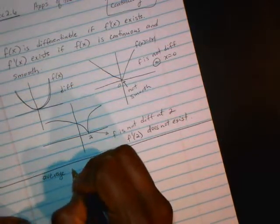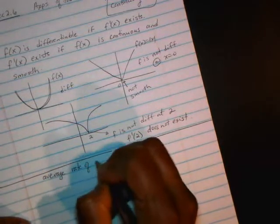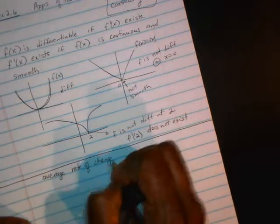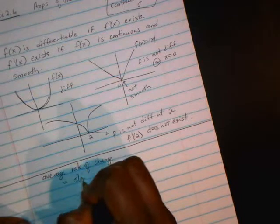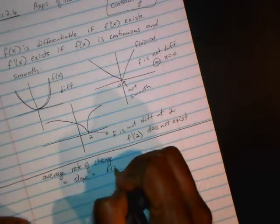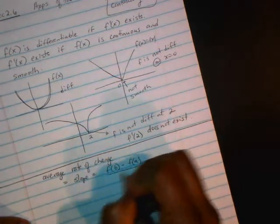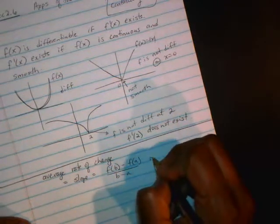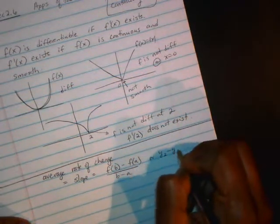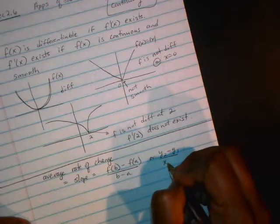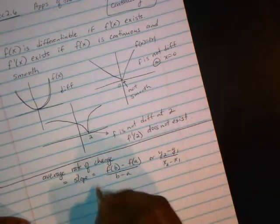So the average rate of change is something you learn in pre-calculus. The average rate of change is just the slope of the secant line, which is f(b) minus f(a) over b minus a. Or you might have seen it as y2 minus y1 over x2 minus x1. Same idea.